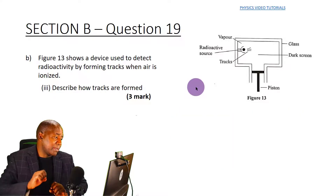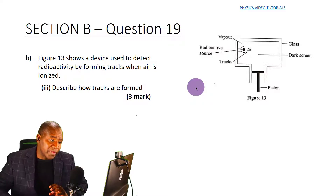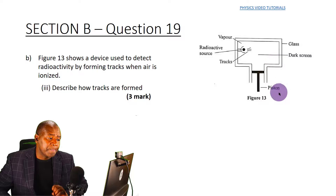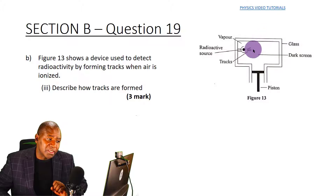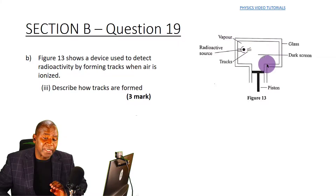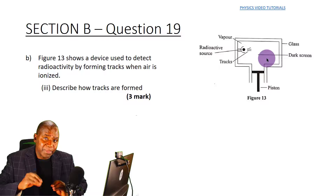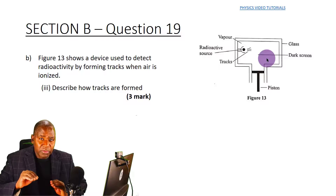For question three, describing how the tracks are formed: when the air molecules become charged particles due to radiation, simultaneously the piston moves down, making the air inside expand and cool down. The vapor inside — whether alcohol or water vapor — condenses around the ionized gas particles, making them appear like clouds or smoke, thus rendering the path of the radiations visible.